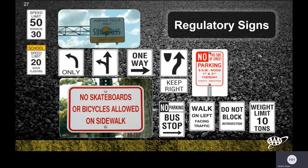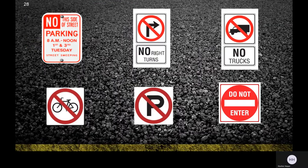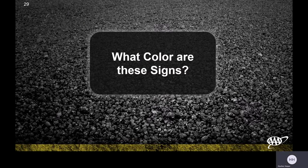Regulatory signs are not always red and white — they can also be black and white. We can see a speed limit of 50, a minimum of 30, directional signs, no parking signs near bus stops, walk-on-left-facing-traffic signs, and weight limits for large vehicles. We also see no parking, no right turns, no trucks, and no bicycles signs. If we pull up to an area and it's not safe to park, there will be a no parking sign.